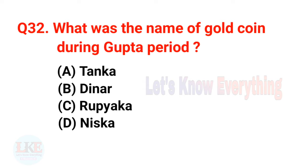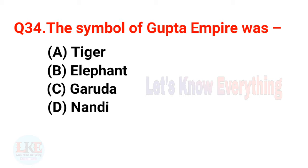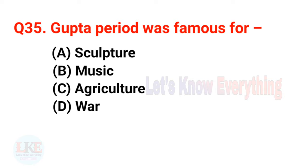Question 32: What was the name of the gold coin during the Gupta period? Options: A — Tanka, B — Dinar, C — Rupayaka, D — Nishka. Right answer: option B — Dinar. Question 33: What was the name of the silver coin? Right answer: option C — Rupayaka. Question 34: The symbol of the Gupta empire was Garuda — the royal symbol of the Gupta dynasty. Question 35: The Gupta period was famous for sculpture.